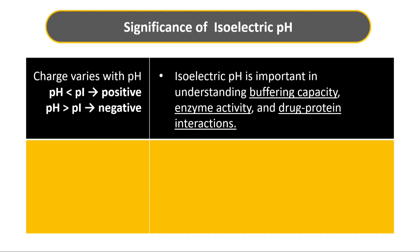The isoelectric pH helps to understand the buffering capacity of proteins. Take hemoglobin as an example: its isoelectric pH is 6.1, whereas physiological pH is 7.4. So the amino acid histidine present in hemoglobin will release its proton and become negatively charged to help balance the pH.